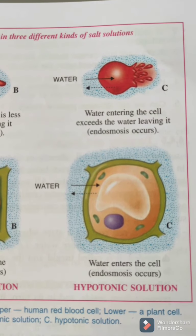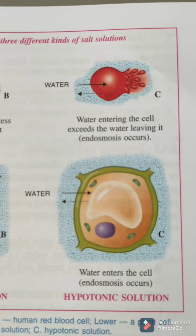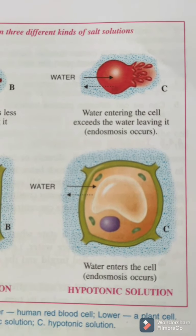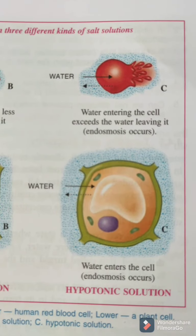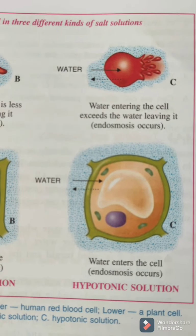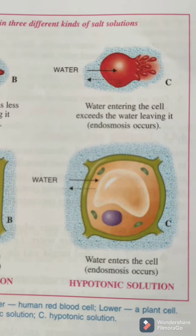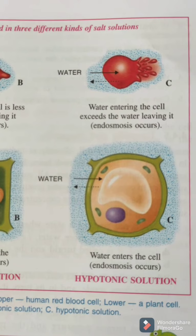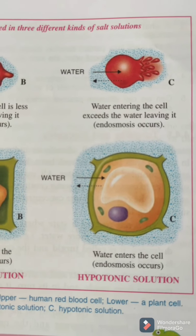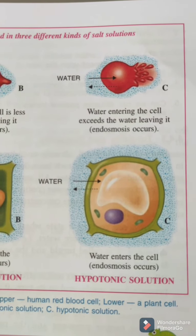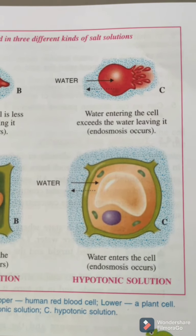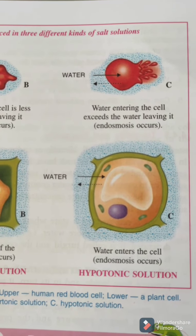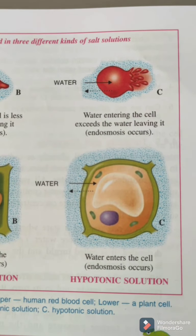In hypotonic solution — which has less concentration than the cell sap and more water molecules — water moves into the cell via endosmosis. The cell becomes swollen, or turgid, and the phenomenon is called turgidity. RBCs can burst due to endosmosis, while plant cells swell fully but are protected by the cell wall — otherwise they would also burst.